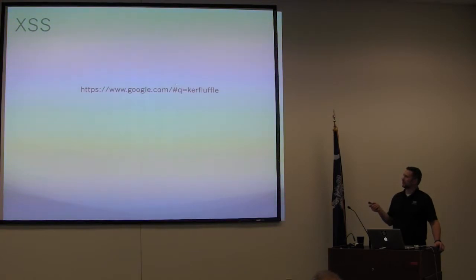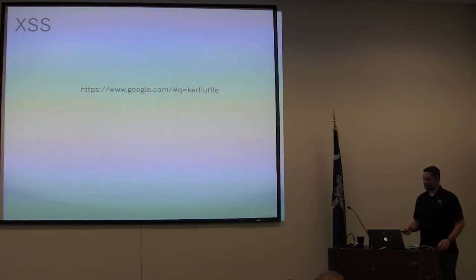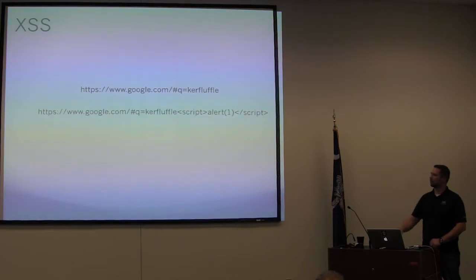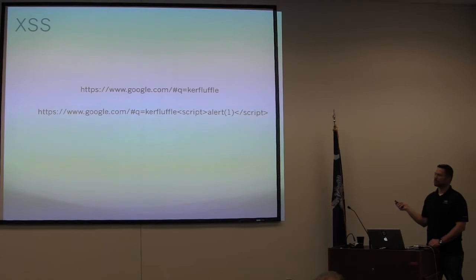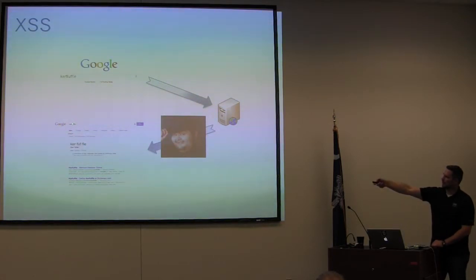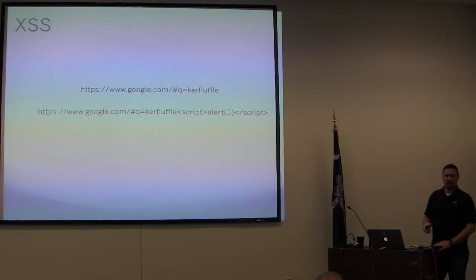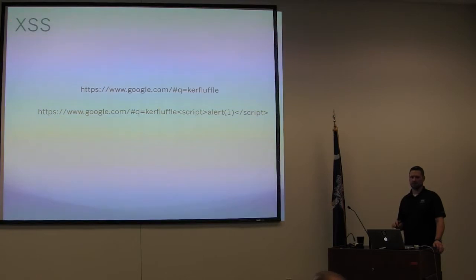This is a generic Google web search — using a hashtag instead of a question mark before the parameter, which uses a JavaScript feature. To execute cross-site scripting in its most basic form, you change what that parameter is. It's sent to the server, the server does no filtering whatsoever, and it's sent back to the client. When it's sent back, the page refreshes and re-reads the code. Instead of saying 'kerfluffle,' it now says 'kerfluffle script alert one,' and you get your pop-up box. That is still very widely in place and is your starting test.